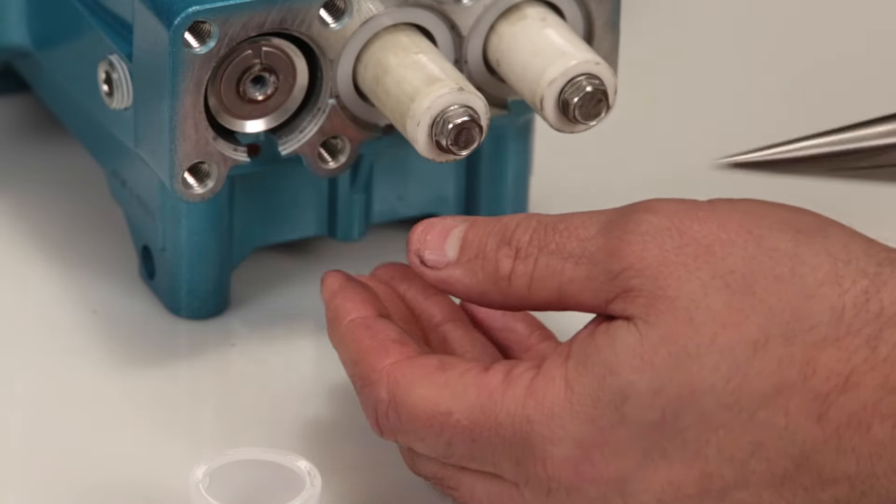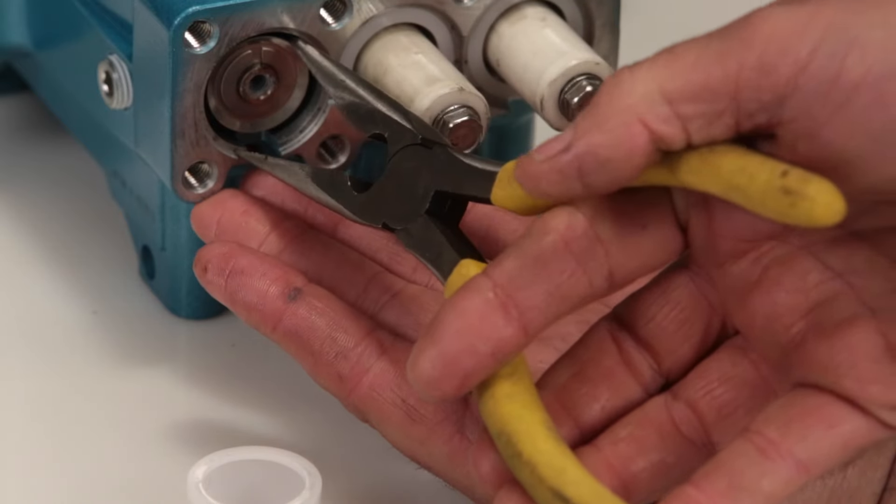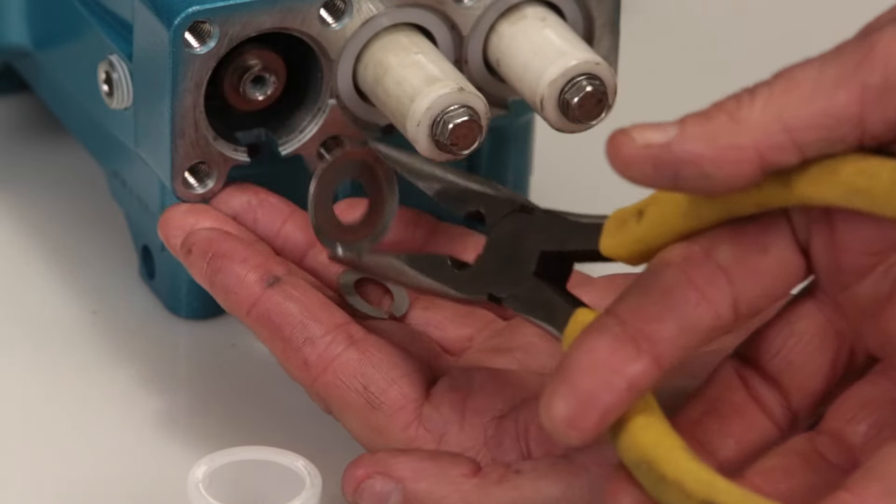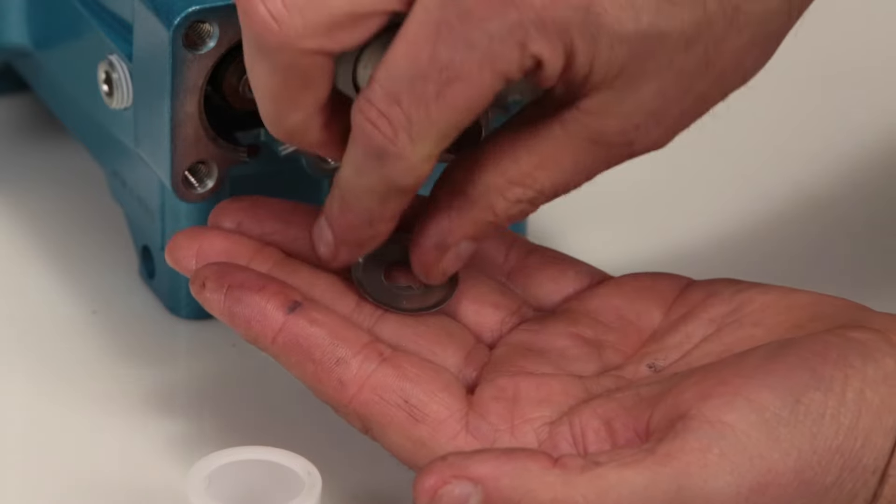Remove the keyhole washer and barrier slinger located behind the plunger. Both parts serve as a barrier to prevent water from entering the crankcase.